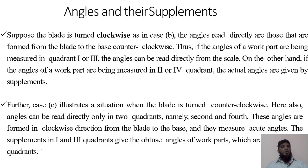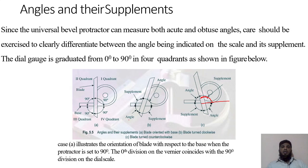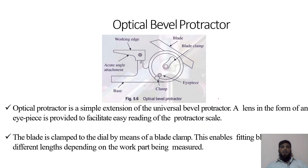In case C, the blade is turned clockwise. Generally we measure angles in the counterclockwise direction, but when turned clockwise, angles can be read directly on quadrants two and four. These angles are formed in the clockwise direction from the blade to the base and they are acute angles. Here the angle is measured in the counterclockwise direction, hence we go for the supplement of angles.